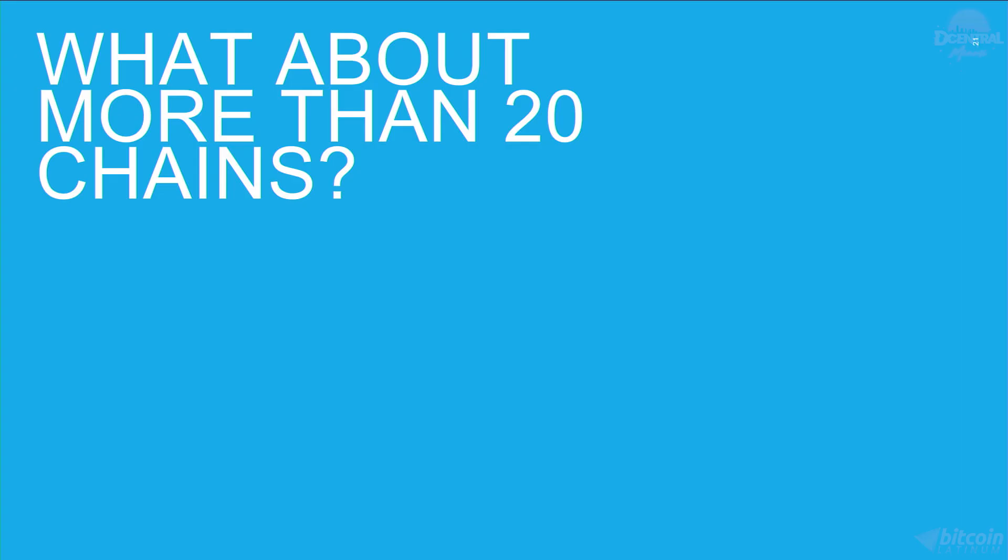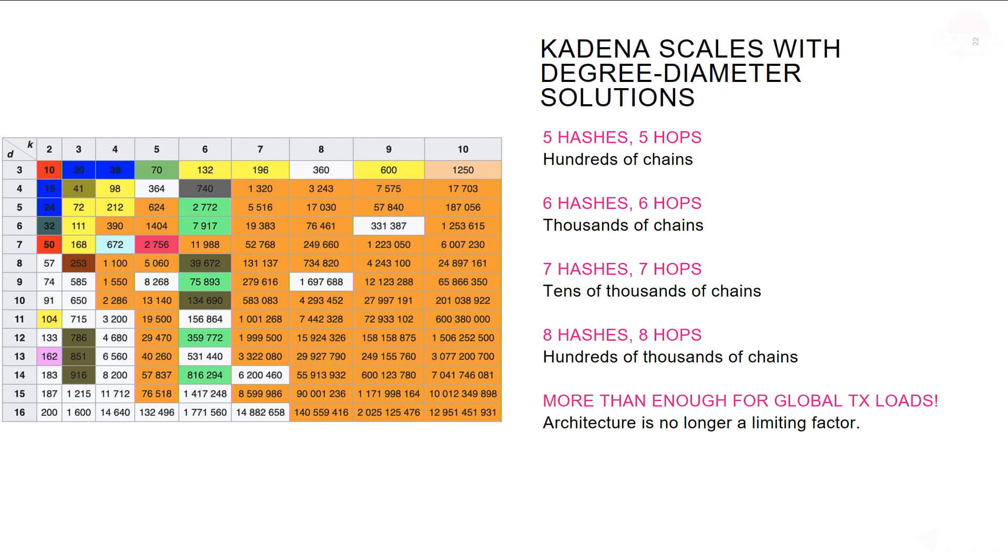But what about more than 20 chains? This is where the graph theory solutions to the degree diameter problem come into play. This table shows a summary of the best solutions. If we have five hashes and five hops, we can get hundreds of chains. Six hashes and six hops gets us up to thousands of chains. Seven gets tens of thousands. And eight hashes and eight hops gets us hundreds of thousands of chains. This is more than enough to handle global transaction loads.